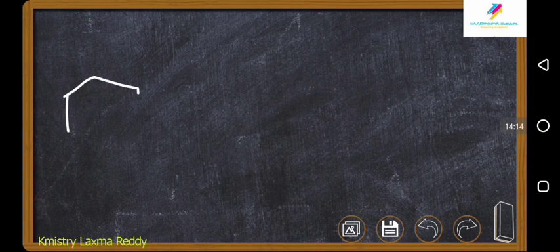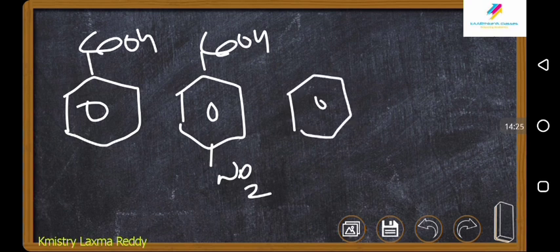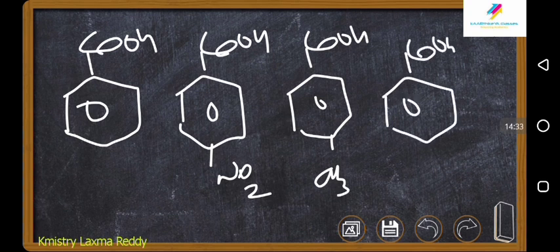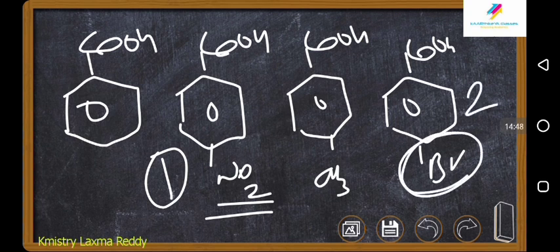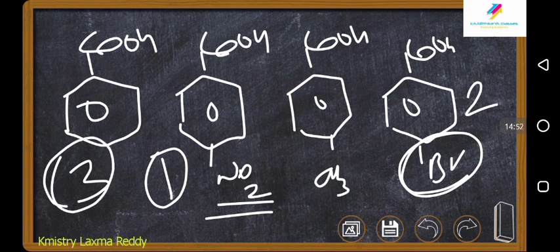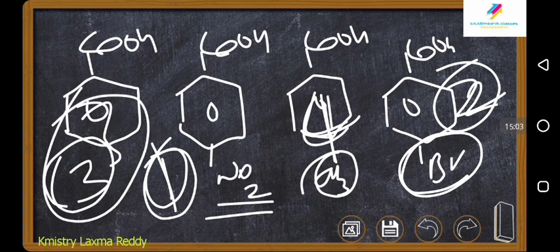A simple question: compare COOH with NO2 at ortho, COOH with methyl group, and COOH with bromine — which is the strongest acid? The answer is NO2 group, because it has the stronger minus R and minus I effects. Second is bromine. Third is benzoic acid itself. And last is methyl — because methyl involves hyperconjugation and is not a good electron withdrawing group. So the order is: NO2 substituted > bromine substituted > benzoic acid > methyl substituted.